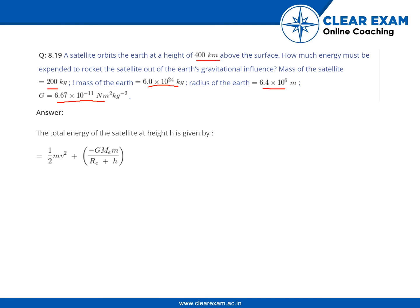So the total energy of the satellite at height h is given by this formula: ½mv² plus minus GMₑm/(Rₑ + h).